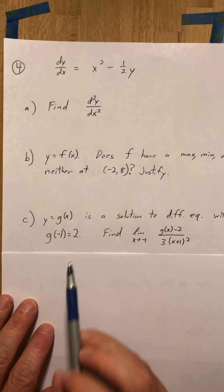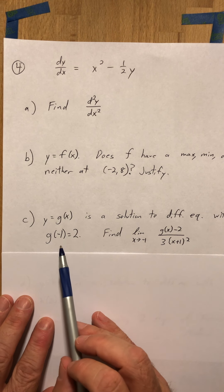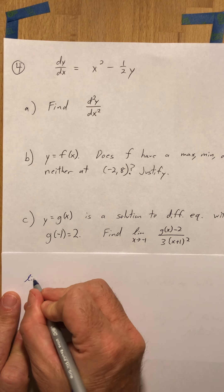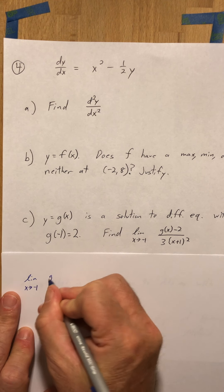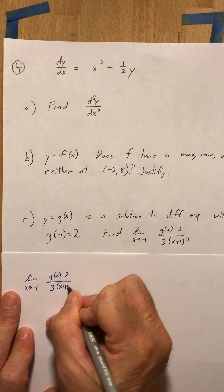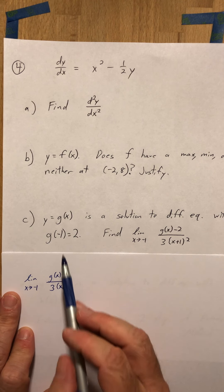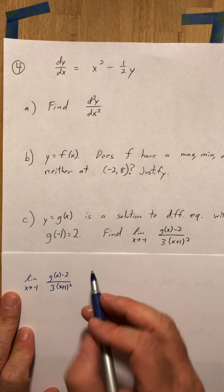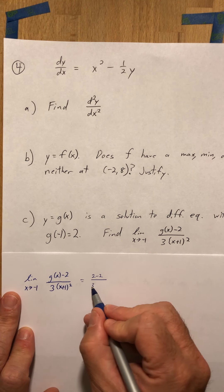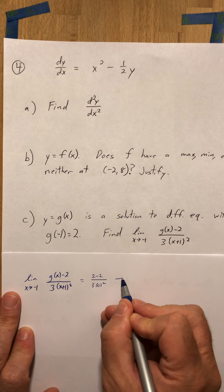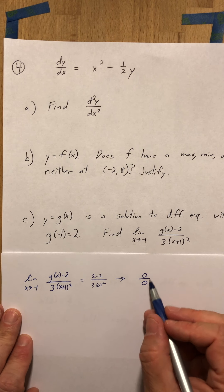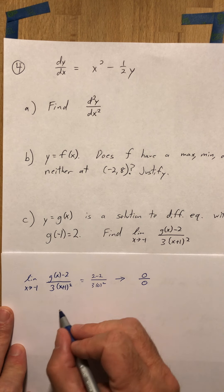Part c: suppose you have a function g whose solution is the solution to the differential equation with a different initial condition. The question asks for the limit as x approaches negative 1 of g of x minus 2, over 3 times x plus 1 squared. Substituting negative 1, I know g of negative 1 is 2, so I get 2 minus 2 on top and 3 times 0 squared on the bottom — a 0 over 0 indeterminate form — so I want to use L'Hôpital's rule.